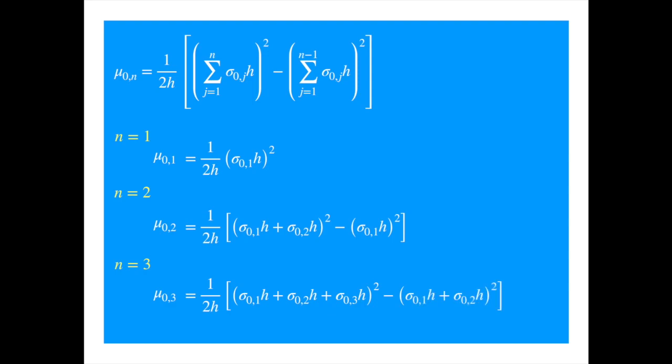So the HJM drift is not too hard to understand and interpret in discrete settings. Now could you try to derive the drift under the TF forward measure. You shall get a very similar result, but it's worth a try.